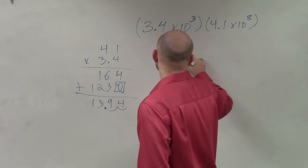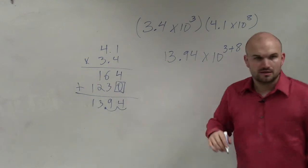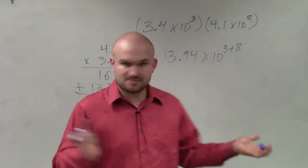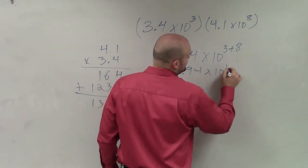So I have 13.94 times 10 to the 3 plus 8. Do you guys follow me with my rules of exponents with the base 10? You're just adding the exponents, right? OK? So I have 13.94 times 10 to the 11th power.